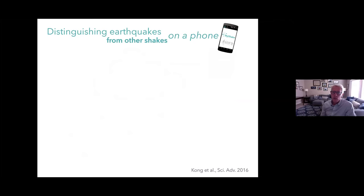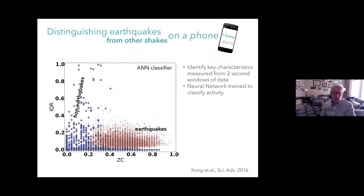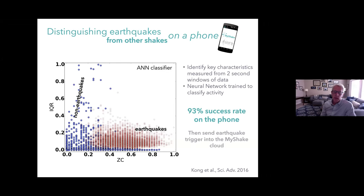The key intelligence in the system is separating earthquakes from non-earthquakes. Work by Ching Kai Kong uses two-second windows of data to separate these signals with more than 90% success. Once an individual phone thinks it's seeing an earthquake and sends a trigger to the server, the system can rapidly confirm an earthquake is underway by combining triggers from many phones simultaneously.